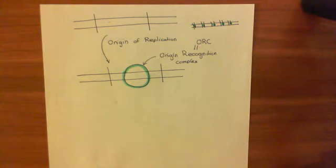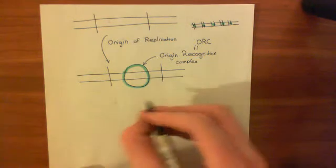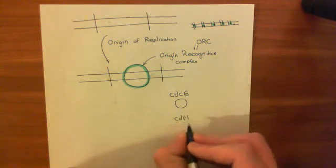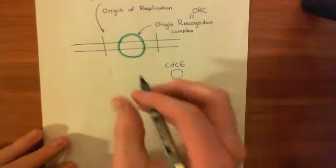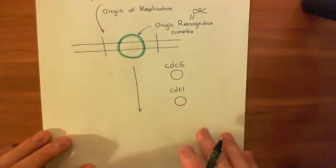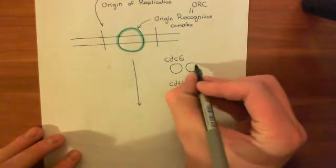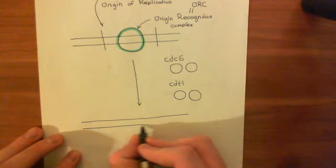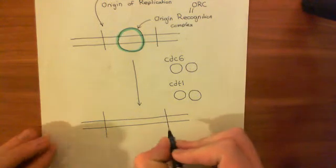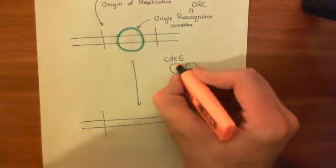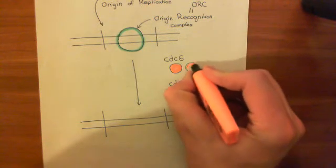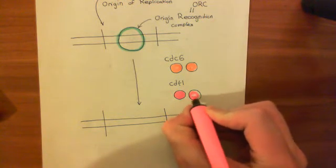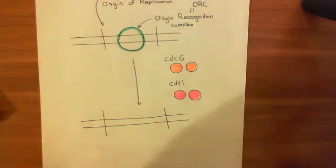That's the first step in forming this pre-replication complex. The next step is that two more proteins need to come and associate: CDC6 and CDT1. You'll hear about these proteins quite a lot - they're quite important. Not just one of each associates, but in fact two CDC6s and two CDT1s come in. We'll colour-code CDC6 in orange and CDT1 in pink.